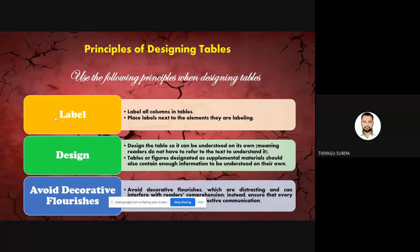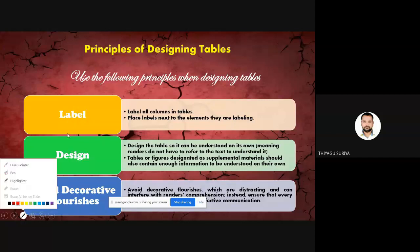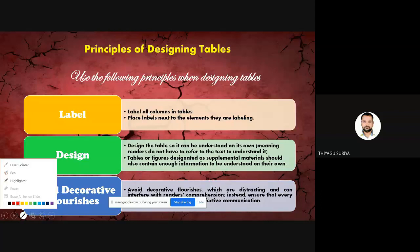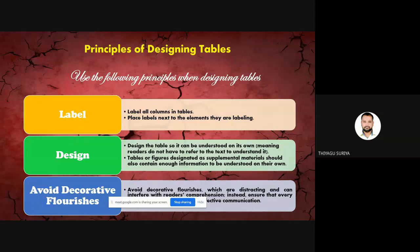Now I'm going to focus on the principles of designing tables. The first principle is label. Even when I showed a thesis dissertation, they're using labels after the table — they use some kind of caption. Each column or each row has some kind of heading, particularly called stub headings. Label all columns in a table, and place labels next to the elements you are labeling.